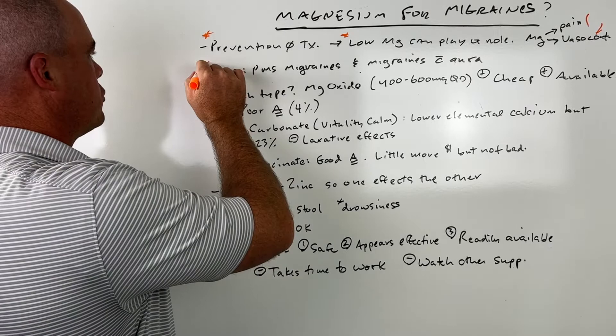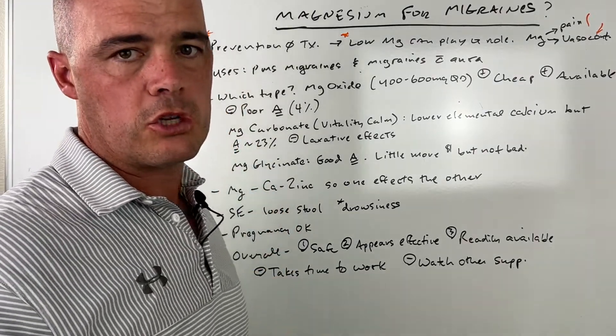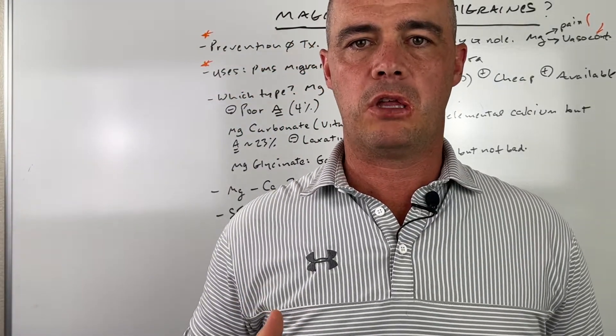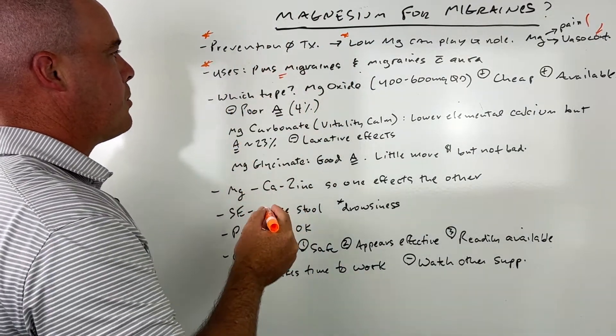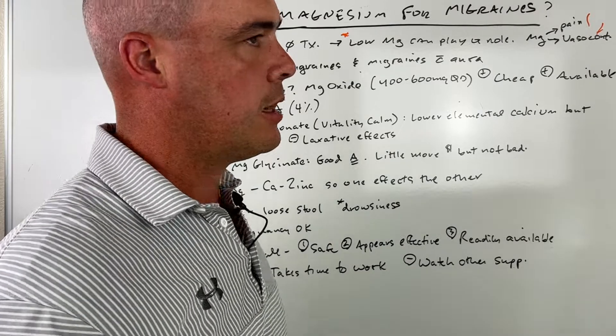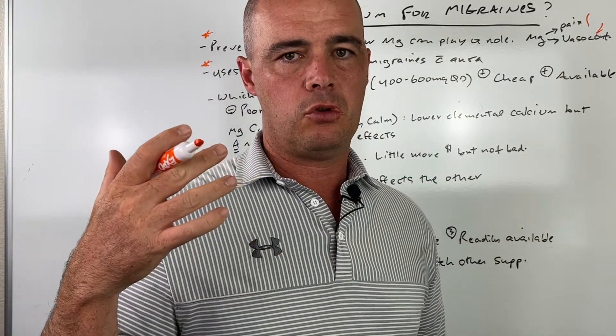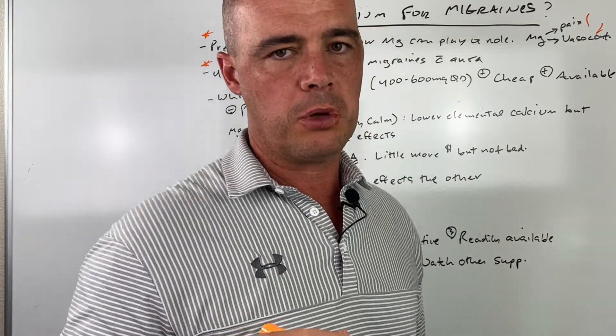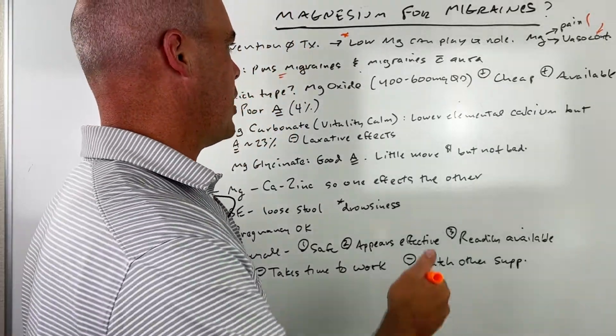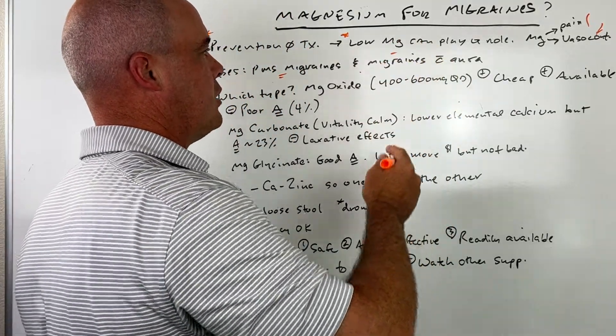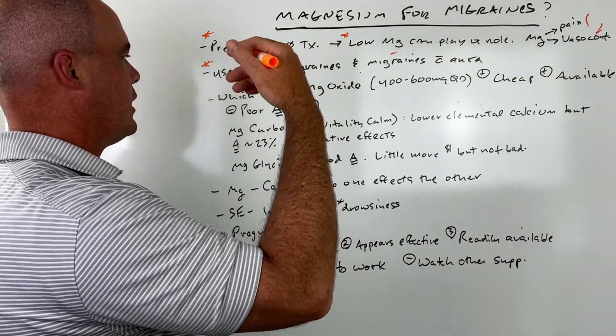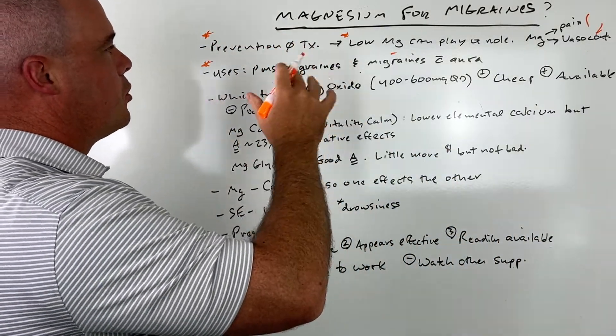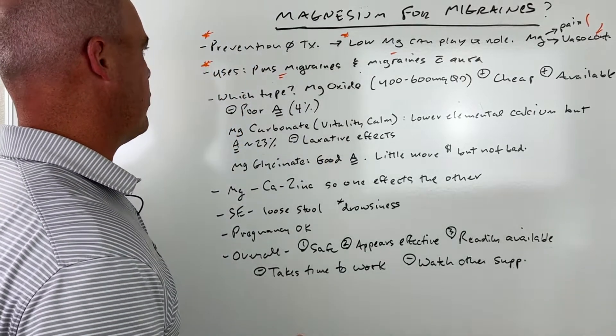Are there certain types of migraines, certain situations where magnesium may work better than others? Yes. We believe it would be very helpful for PMS migraines in women. Some women two, three, four, up to a week before their period start having these migraines. Also migraines with aura, bright flashing light and not necessarily flashing, but they can have these auras. Pretty good feedback on those two types of migraines.